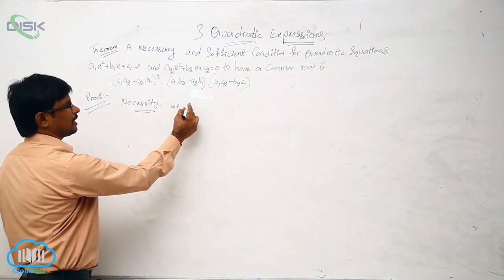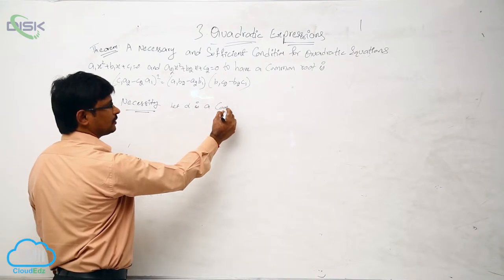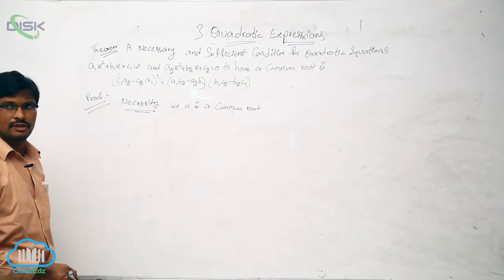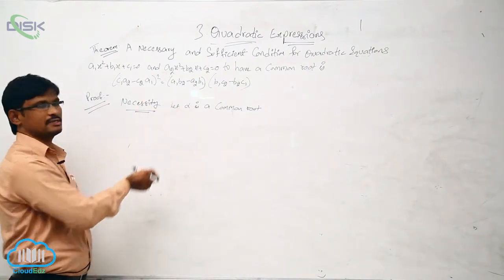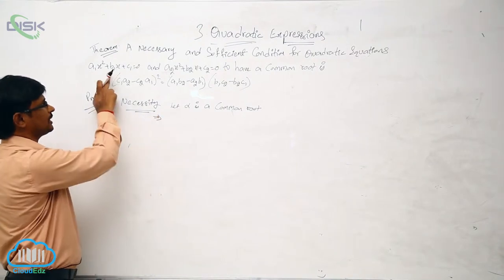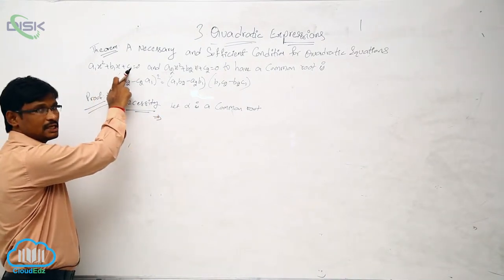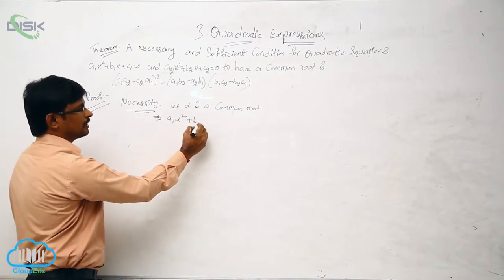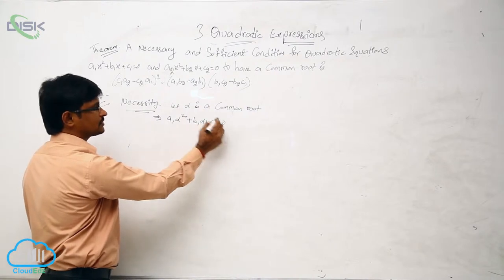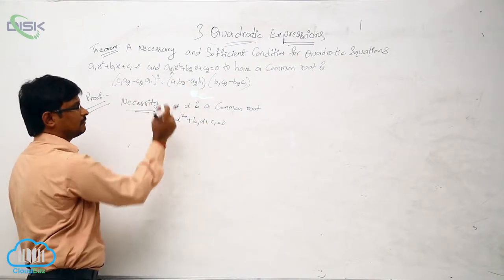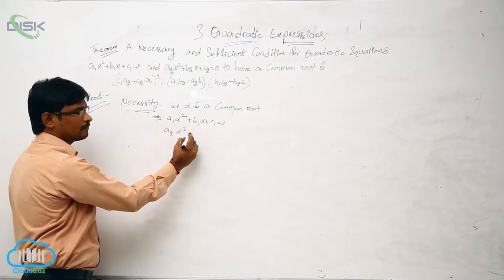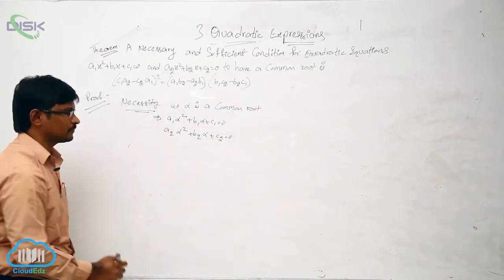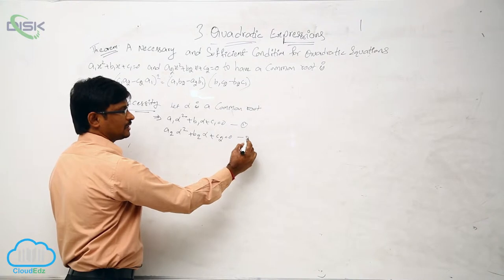Now I am taking: let alpha be a common root of both the quadratic equations. So we know that if it is a root, it should satisfy the equations. The two equations we have are: A1·x² + B1·x + C1 = 0 becomes A1·α² + B1·α + C1 = 0 (first quadratic equation). Similarly, for the second one: A2·α² + B2·α + C2 = 0. Now take these as equation 1 and equation 2.